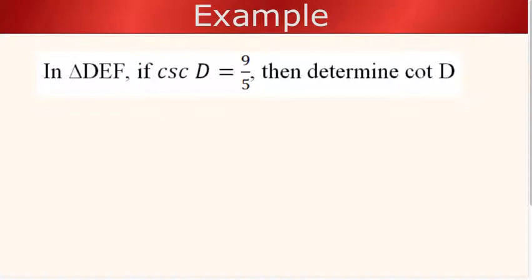For example, if I have a triangle DEF, if the cosecant of D is 9 over 5, then determine the cotangent of D. Since I have a triangle, let's draw a triangle. Let's label it DEF, and it says that the cosecant of angle D would be 9 over 5.